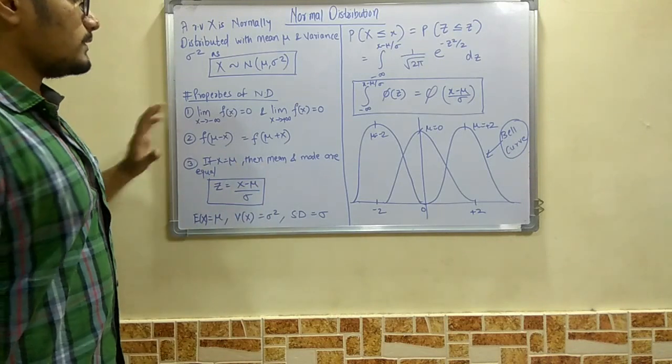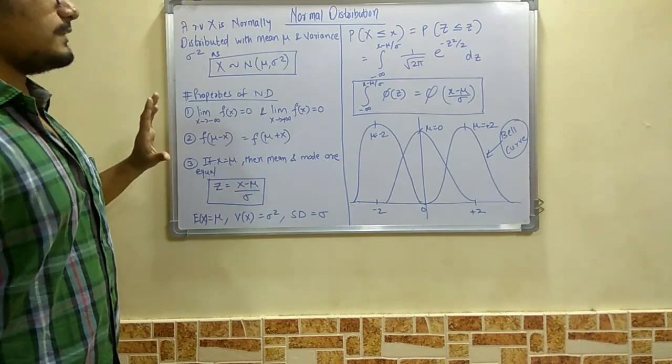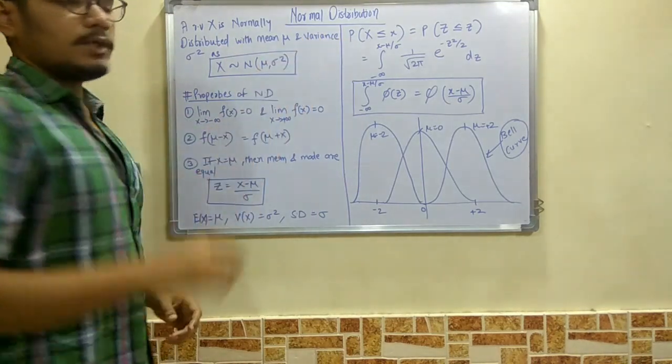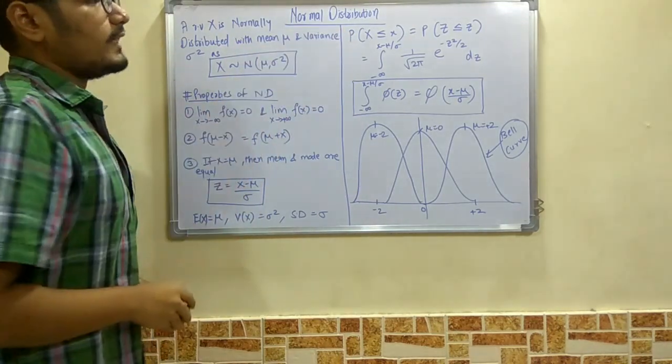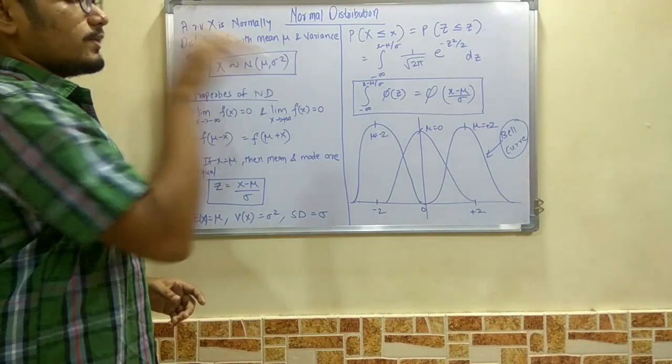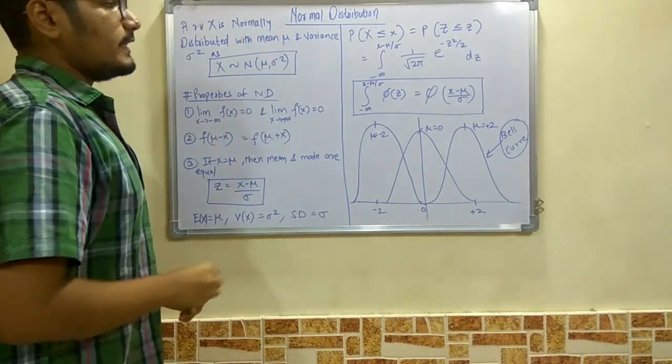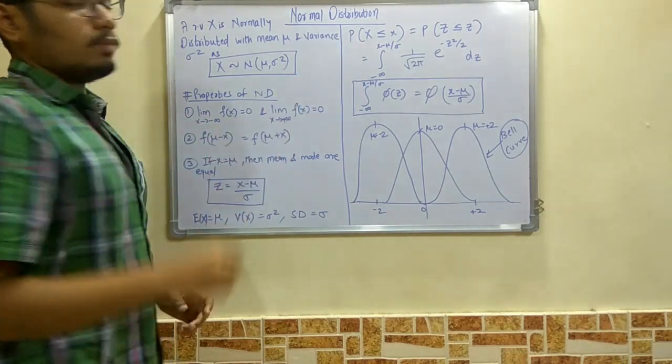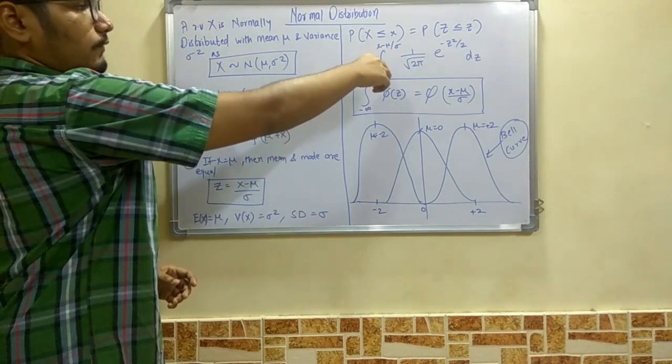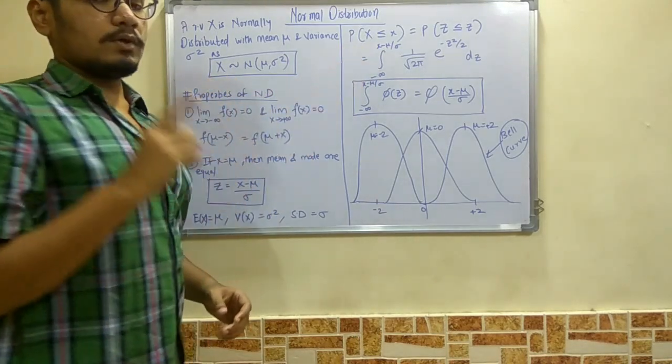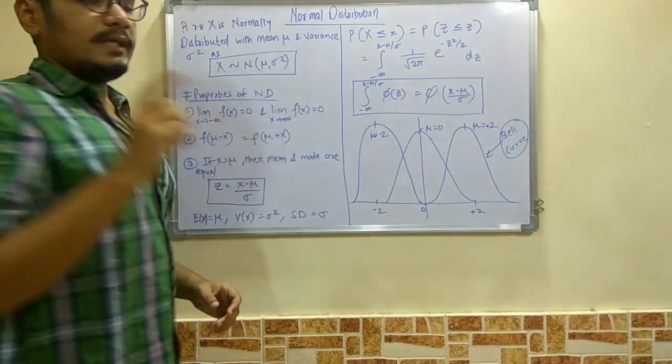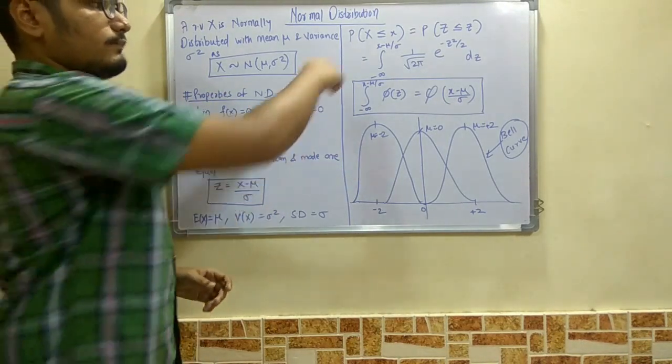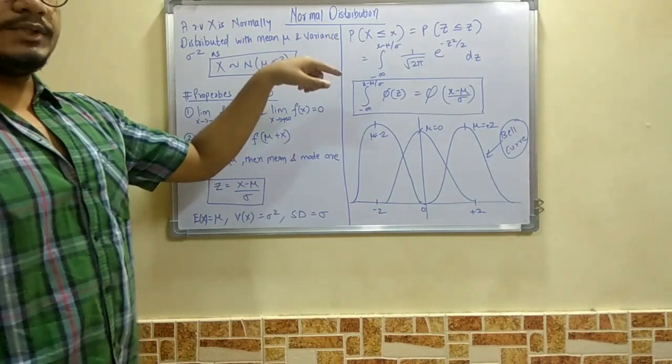Next we have this identity: if P(X ≤ x) = P(Z ≤ z), then we have the integration from -∞ to (X - μ)/σ of the function 1/√(2π) × e^(-z²/2) dz. This is mostly used when this is the case or condition; we use this identity for solving in most cases.